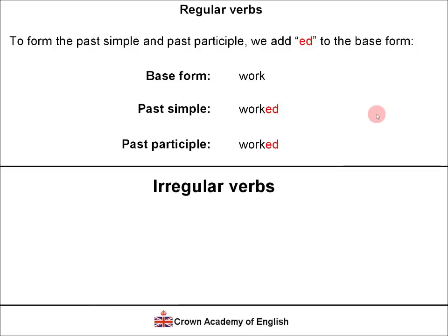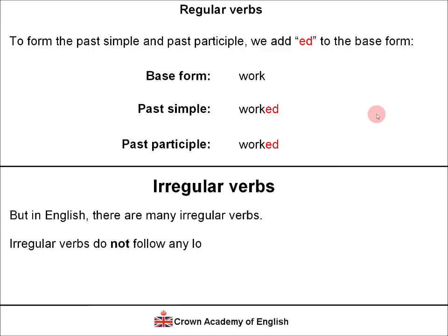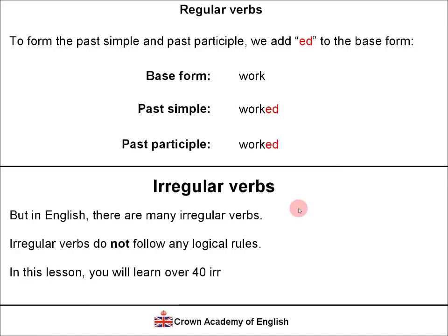So now let's look at irregular verbs. In English, there are many irregular verbs. They are very common. And irregular verbs do not follow any logical rules. So by definition, irregular verbs do not have this rule — this rule does not apply to irregular verbs. There are no rules, in fact. So in this lesson, you will learn over forty irregular verbs with example sentences. So try to learn all of these verbs.